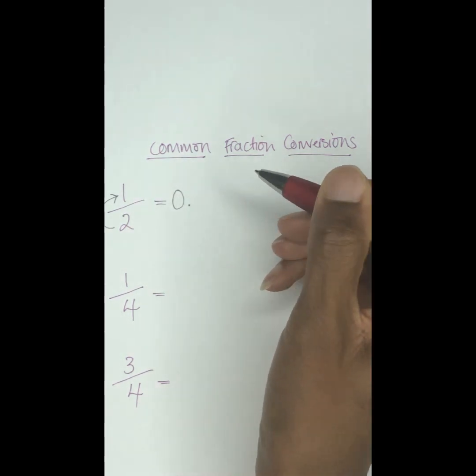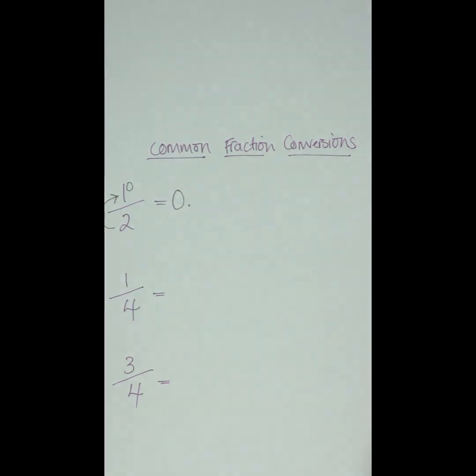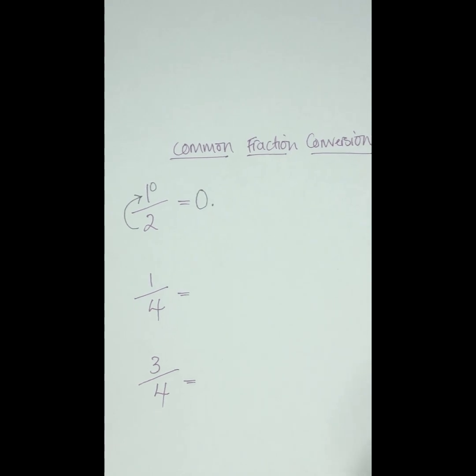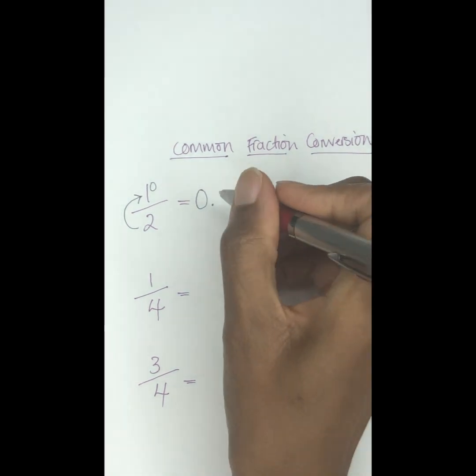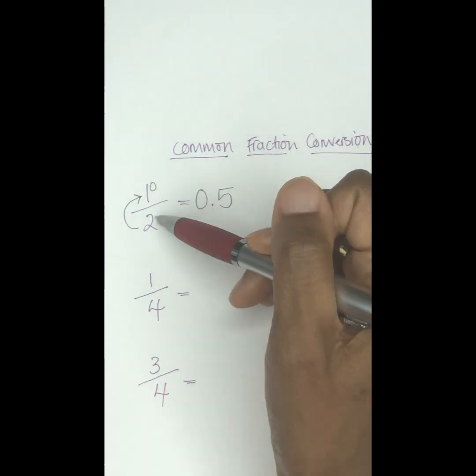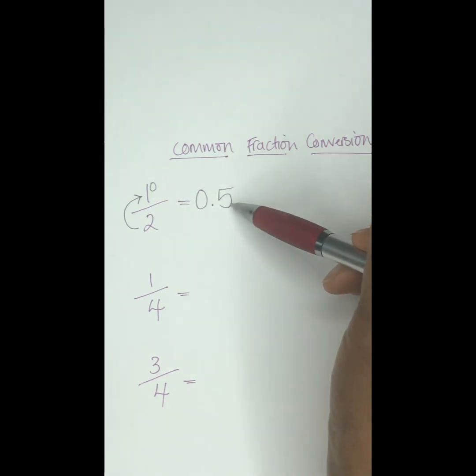Now 2 goes into the 10 five times. There we have it, it goes in equally so there's no remainder. So 1/2 is 0.5.